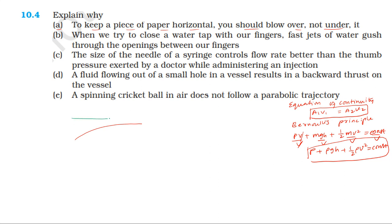When air is blown above the paper, the velocity above the paper increases. Below the paper the air is not moving, so its velocity is not high. We consider two points: point 1 is above the paper and point 2 is below the paper. The distance between them is very small, so the potential energy at both points is approximately equal.